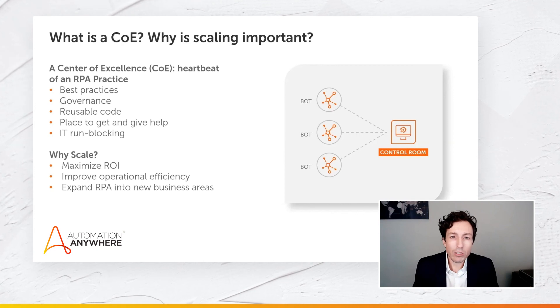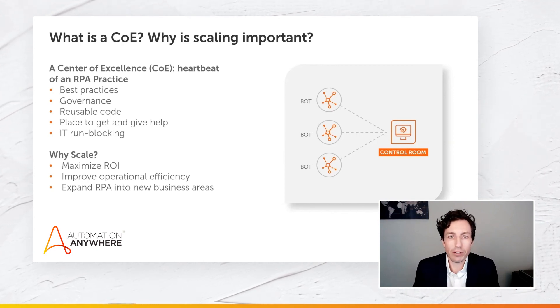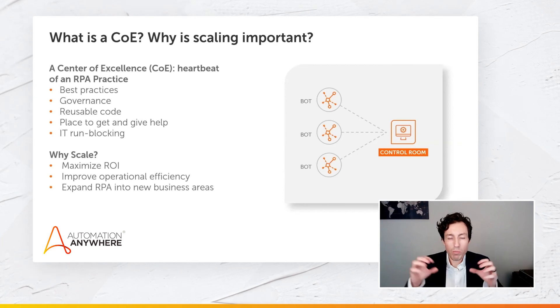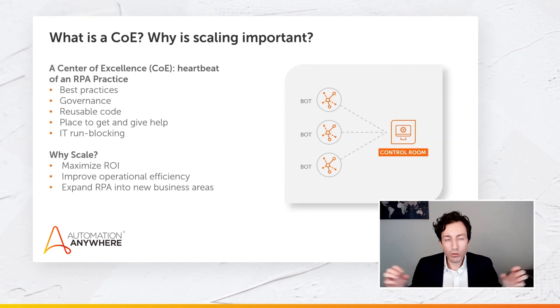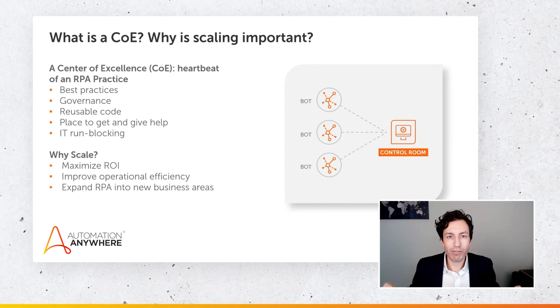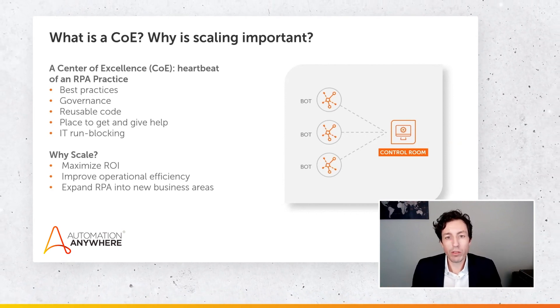Scaling also allows RPA to expand into new business areas. As we start to scale, we bring in those new spokes or new hubs. As those different factories onboard, the COE is responsible for helping those factories get up to speed and allowing our organization to scale as we add new factories to our RPA practice.